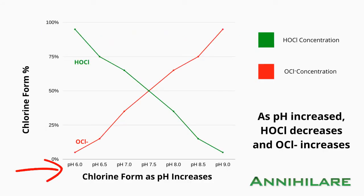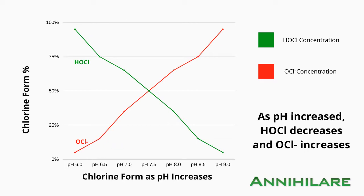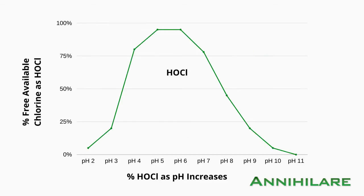If you notice on the x-axis, we have the pH, and on the y-axis, we have the percent of free available chlorine. Starting on the left, the hypochlorous acid concentration is very high and the hypochlorite is very low. Notice how that begins to switch as the pH increases. Also notice that at pH 7.5, there is a 50-50 convergence of hypochlorous acid and hypochlorite ion concentration. You can also look at the concentration of hypochlorous acid through a normal distribution, showing that most of your hypochlorous is between pH 4 and pH 7.